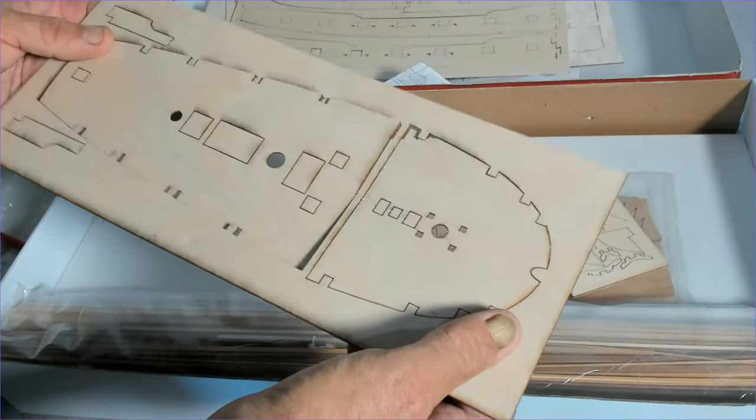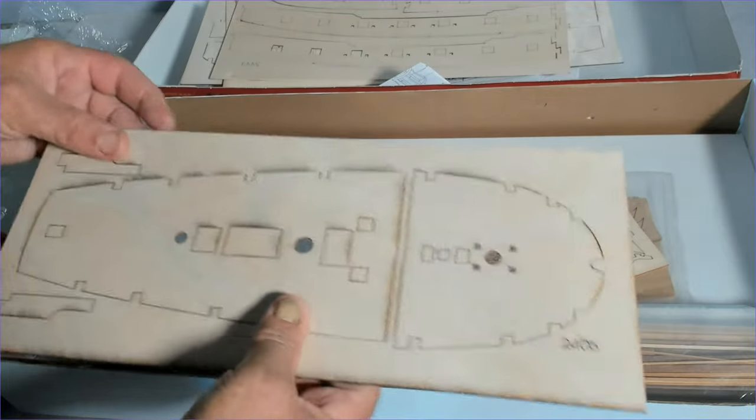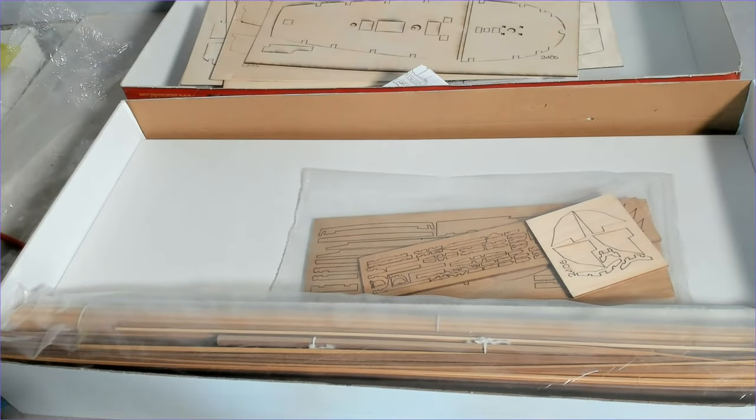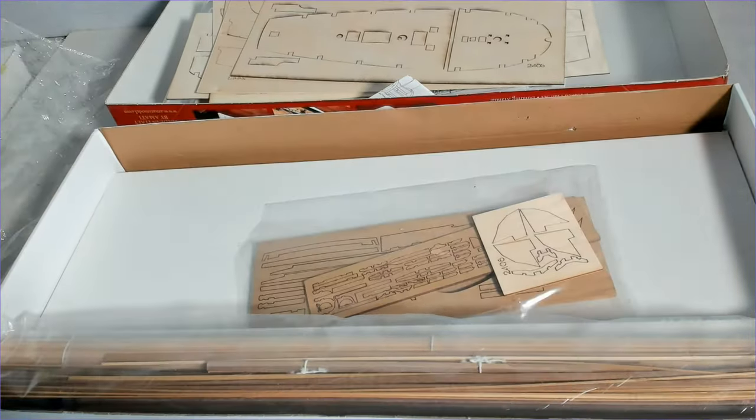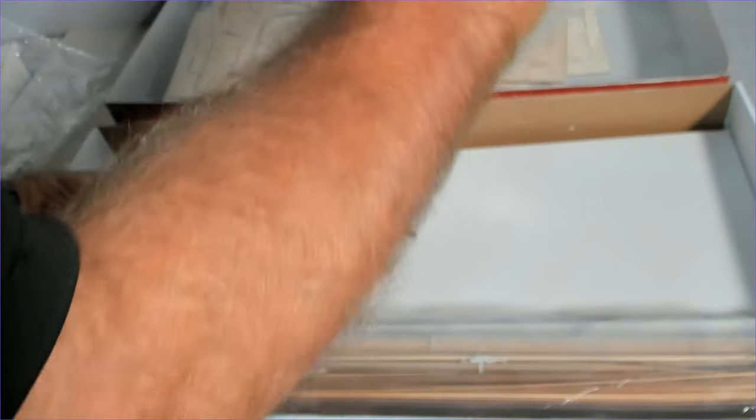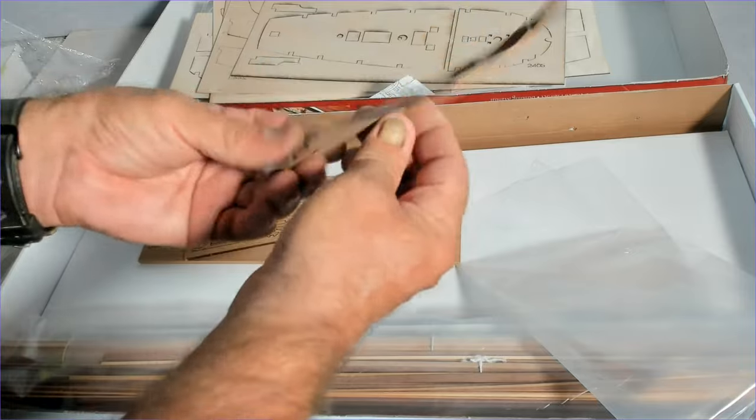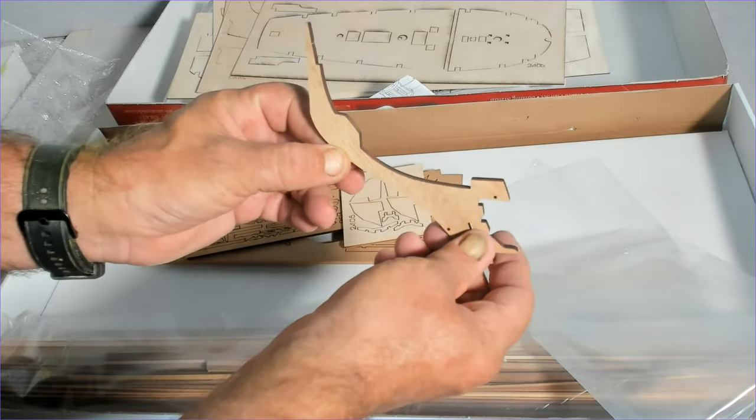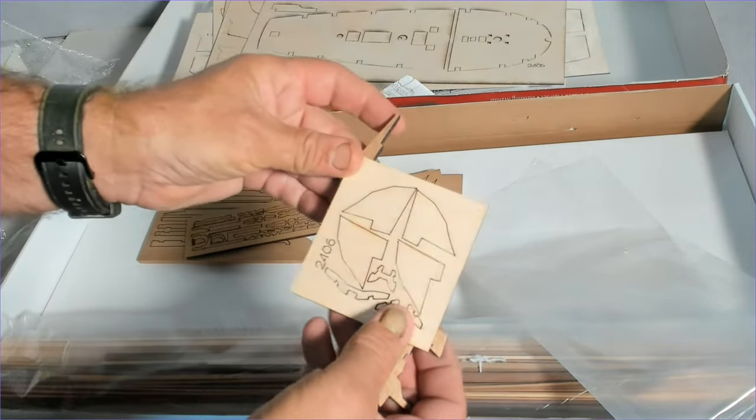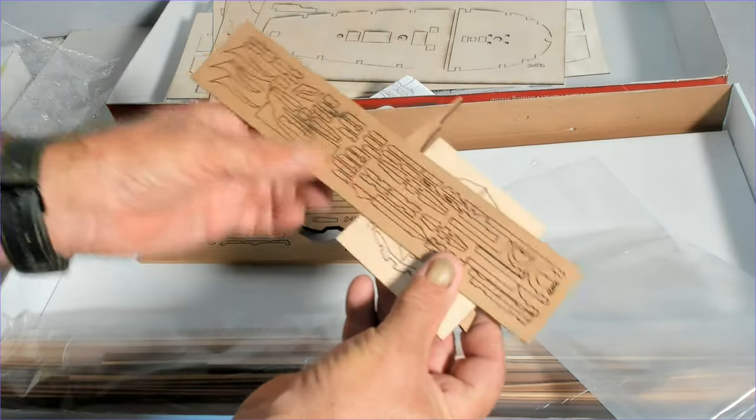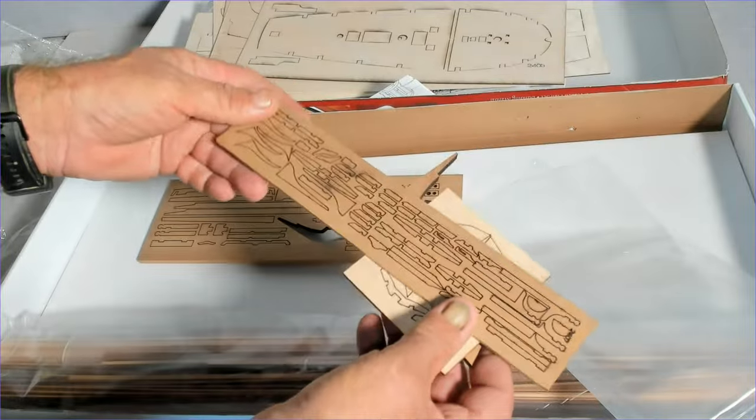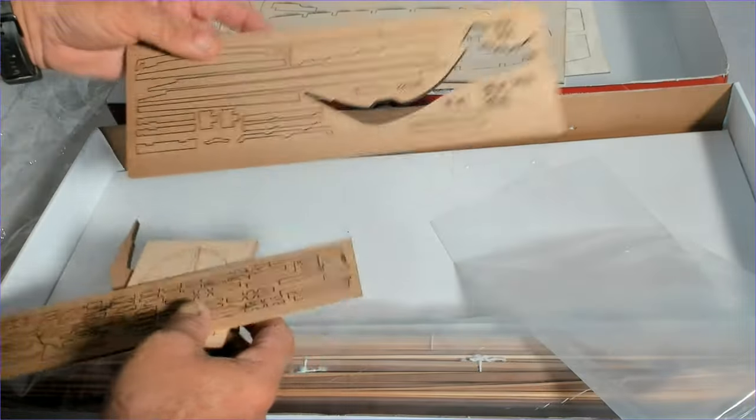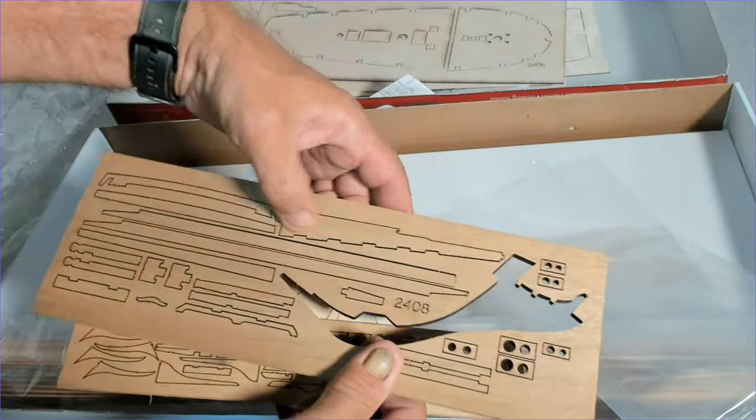Okay, the next pack. Goes under the keel up to the front of the bow. More bits and pieces. That's quite a good quality wood there, like almost like a walnut. A bit of sapele. There's the rudder.